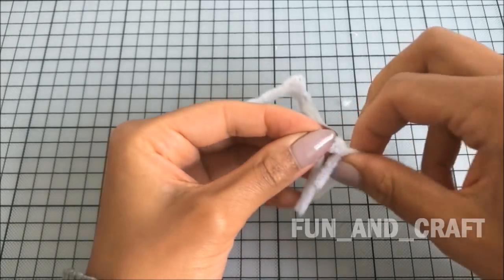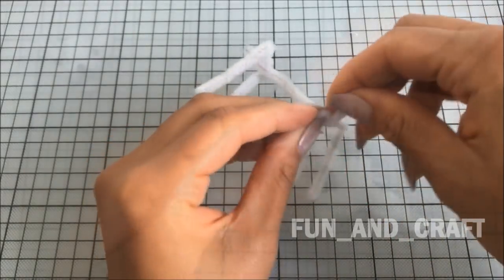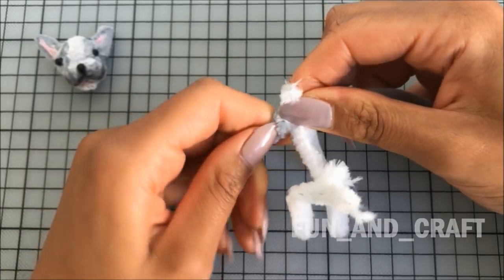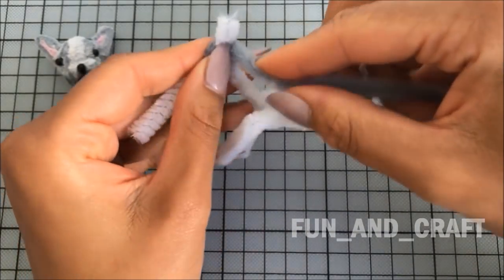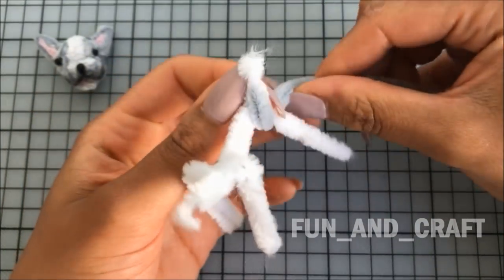I left four centimeters space between the two sets of legs for the chest, the belly, and the back. Now start wrapping gray pipe cleaners around the shoulders and the neck like this.